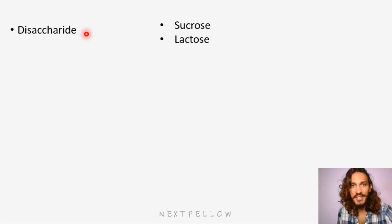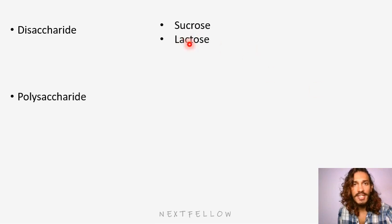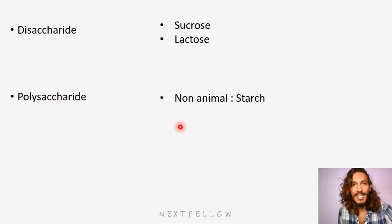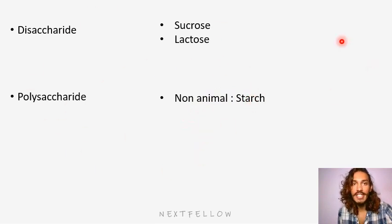So disaccharides: sucrose is what we get in our table sugar. Lactose is an important part in your milk that you ingest. Apart from that, polysaccharides — especially the non-animal part which is like starch — these include the majority of the carbohydrates.